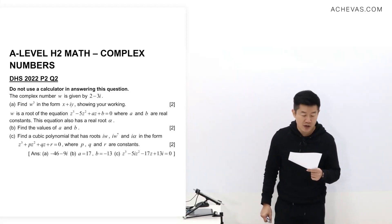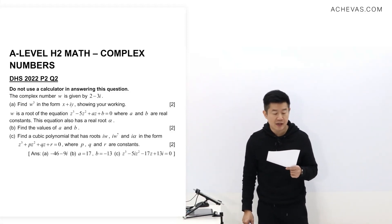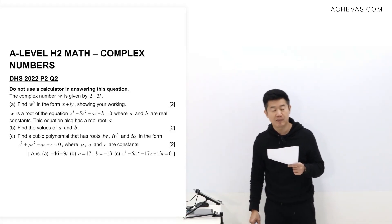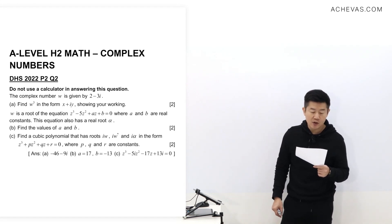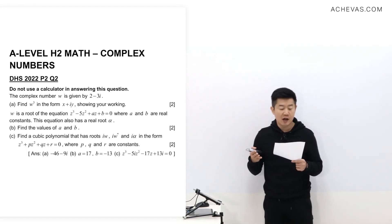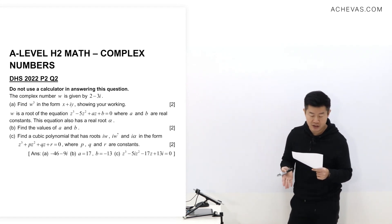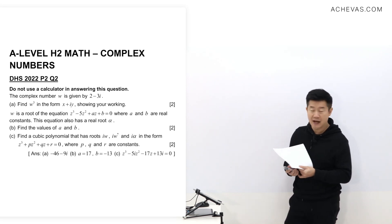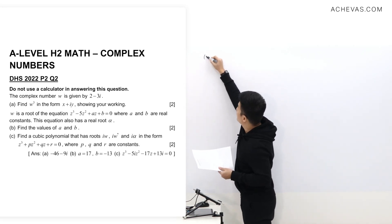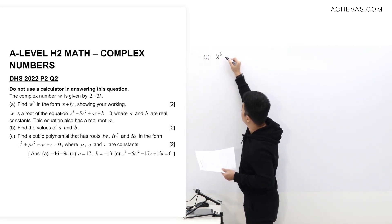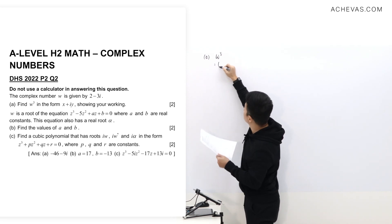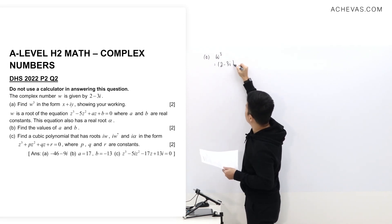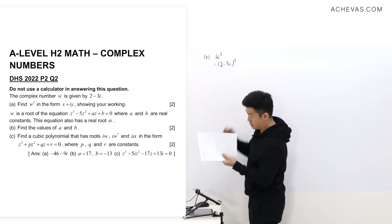We are going to be looking at a question from Darman High 2022. It is a complex number question, and we are not supposed to be using our calculator in answering this question. We are given the complex number W, where W is equal to 2 minus 3i. In part A, we are to find W to the power of 3, which is equal to (2 minus 3i) to the power of 3.